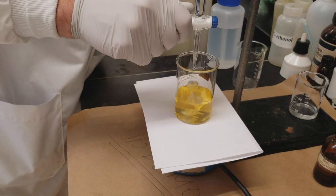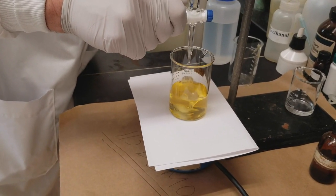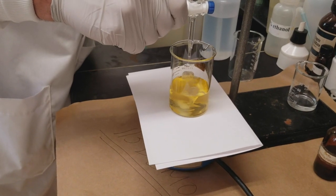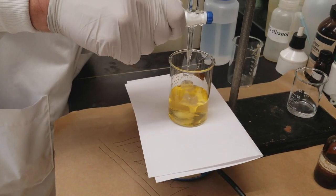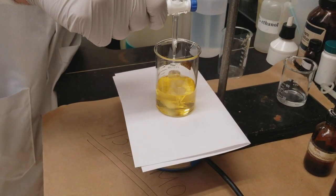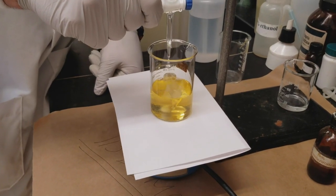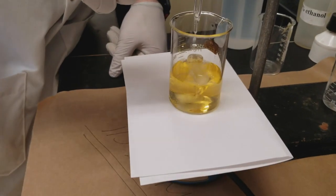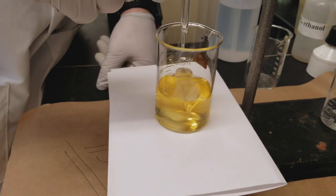And what we're looking for is for this kind of faint orange color to become a deeper orange, and you might start to see that right where the drops of HCl are falling into the solution. So that's what we're going to be looking for.